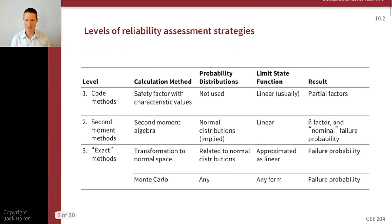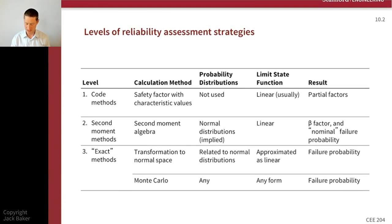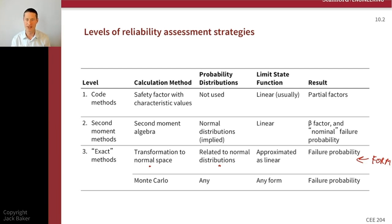Looking at our table of reliability assessment strategies, we've wrapped up the exact method section — most importantly, this is our FORM algorithm. FORM and various flavors of it, like STORM, we transform ourselves to normal space. We related the probability distributions to normal distributions through our transformation cases, then approximated the limit state function as linear, and got an analytical failure probability. We get a number out of it, the same number every time, with things like our gamma vector to look at sensitivities. But it required these transformations and approximations.